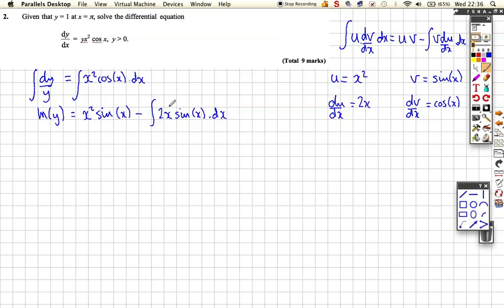However, now this is another product, so we've got 2x and sine x as a product, so we're going to have to do what we call an embedded integration by parts. So we're going to have to integrate this bit by parts within the integration by parts question up here. So we're going to have to choose new u and new v.